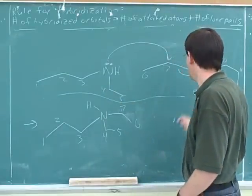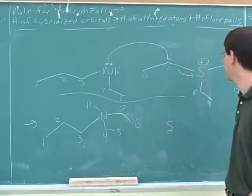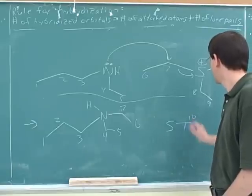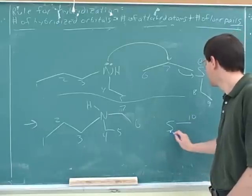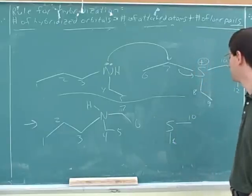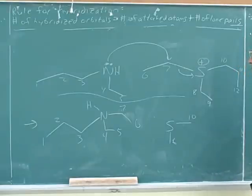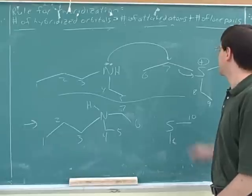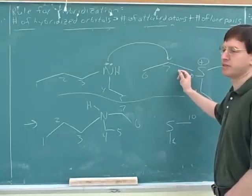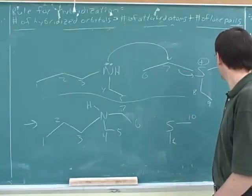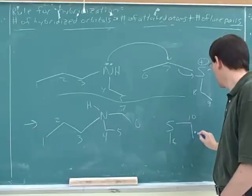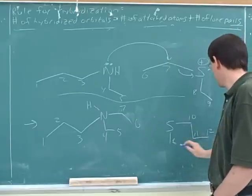Now we can go back to over here. What are all the things that the sulfur will be attached to? It will be attached to 10, 8, and a set of lone pairs. That's right, which we don't need to worry about because we're not going to draw the lone pairs. It's not going to be attached to the 7 anymore because that's what this arrow told us — we're breaking this bond. Who's the 10 attached to? 11 and 12.